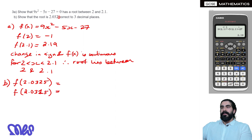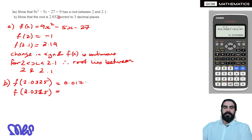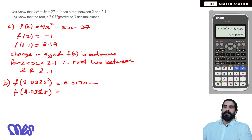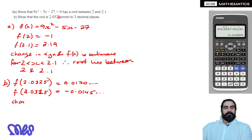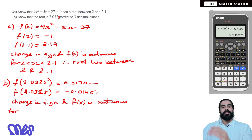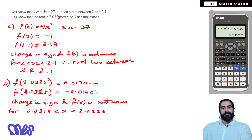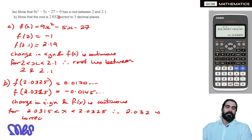We go back and change the calculator input to 2.0325. That gives a small positive number: approximately 0.0170. Then we change it to 2.0315, which is negative: approximately minus 0.0145. So we have a change of sign, and f(x) is continuous between the lower bound and upper bound. Therefore we can say 2.032 is correct to 3 decimal places. That's our solution to question 3.